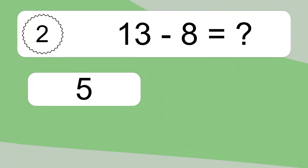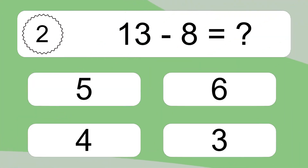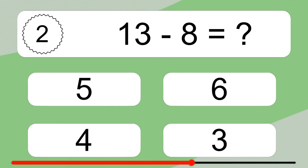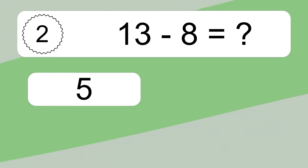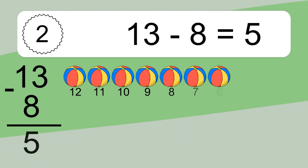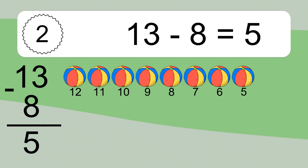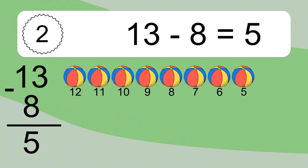13 minus 8 equals what? 13 minus 8 equals 5. Let's count it: 12, 11, 10, 9, 8, 7, 6, 5.